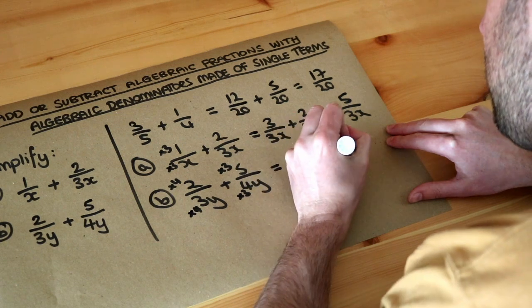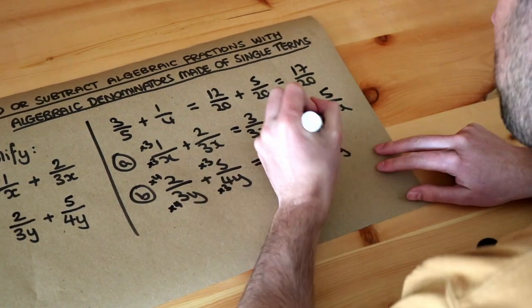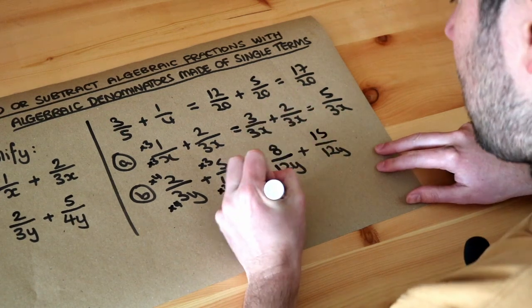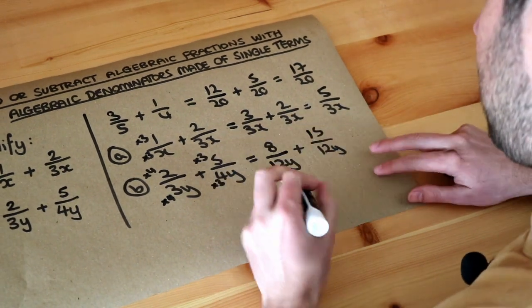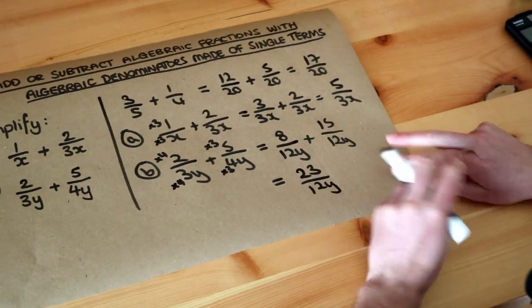So we get 12y and 12y which are the same. The 2 we multiply by 4, and the 5 we multiply by 3. Then we've got the same denominator so we just add the numerators and we get 23 over 12y, and that's the final answer.